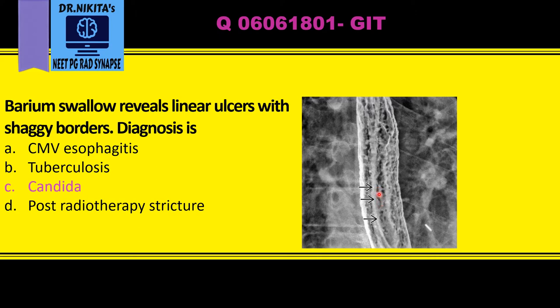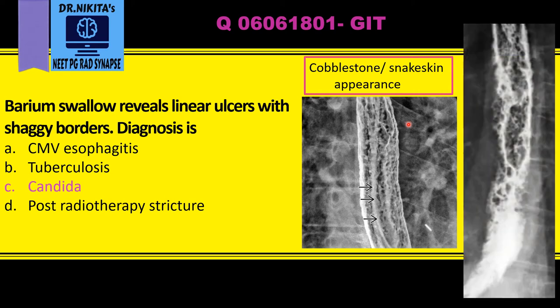The longitudinal plaques give a cobblestone or snakeskin appearance, as the plaques are elevated lesions. When ulcers are also present along with plaques, the appearance of the esophagus becomes very irregular, and this is called the shaggy esophagus, which is characteristic of candida esophagitis.